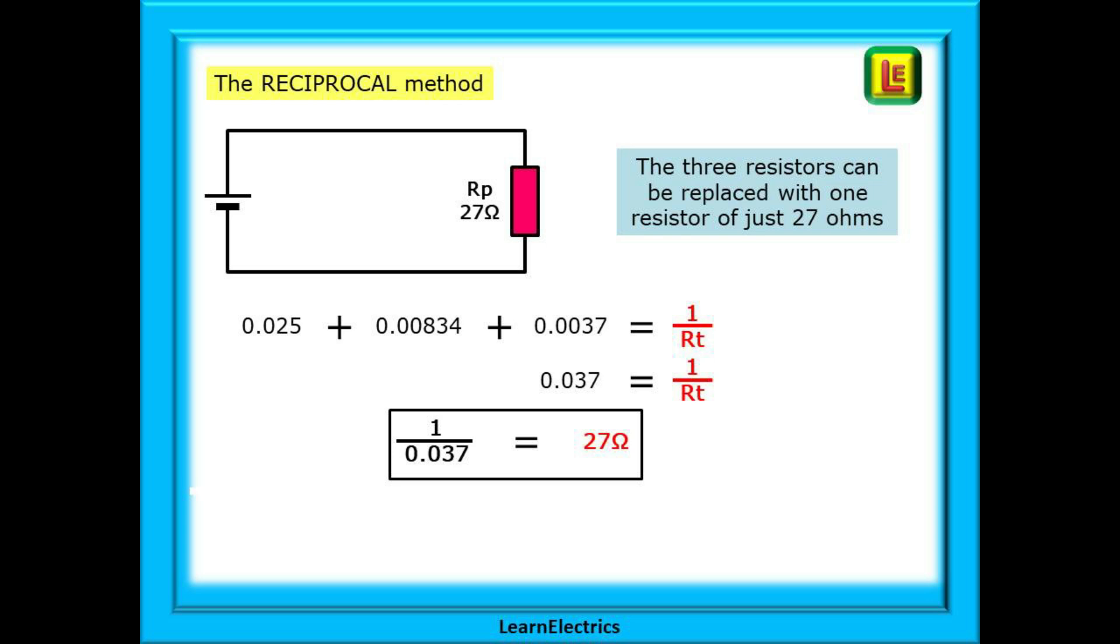But do always be observant with zeros after the decimal point. Make sure that you have the right number of zeros written down, the same as shown on your calculator. A mistake at this stage will give you a wrong answer and you may not realize the error.